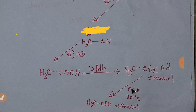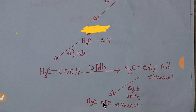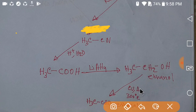If you heat this ethanol in the presence of a copper catalyst at 300 degrees Celsius, the ethanol will be converted to ethanal, which is an aldehyde. This is dehydrogenation of alcohol — one hydrogen is removed from the carbon and one hydrogen from the OH group.